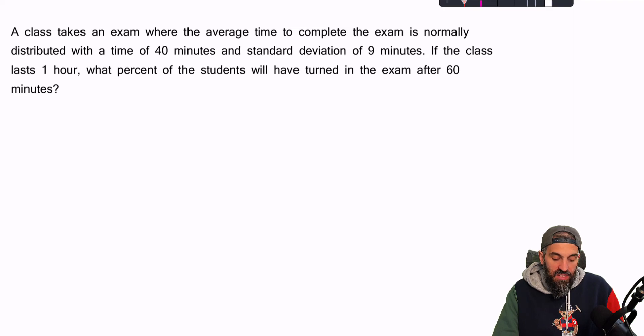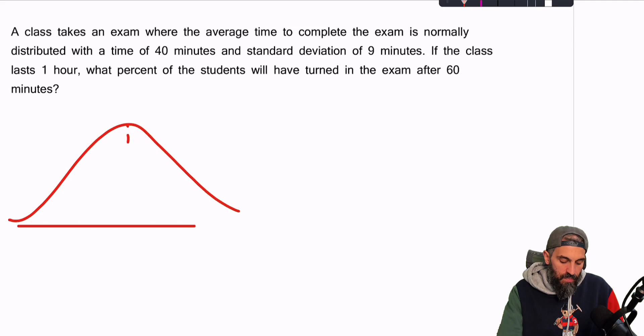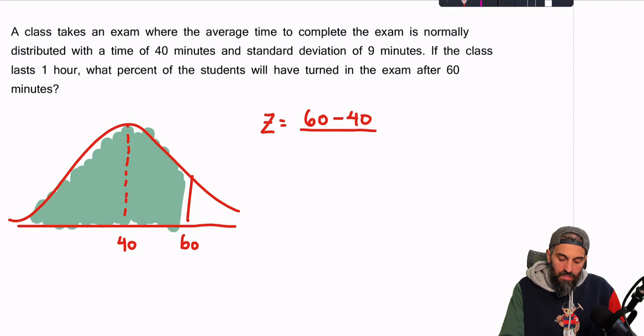Question number 5. A class takes an exam where the average time to complete the exam is normally distributed with a mean of 40 and a standard deviation of 9. If the class lasts 1 hour, what percent of students will have turned in the exam after 60 minutes? So essentially we're asking you what is the probability of finishing the exam within 60 minutes? So let's bring up our bell curve. For this you want to place the mean in the middle as always. We're looking for the probability of less than 60. So everything to the left of 60. Calculate Z score. X minus the mean over the standard deviation. So you should get a value of 2.22. And now we're going to go look that up in the table to find the area that is to the left of that. So that's it for this video everyone. I hope that you found it useful. If you have any questions, please leave them in the comments. I'd love to hear them. And I'll see you at the next video.